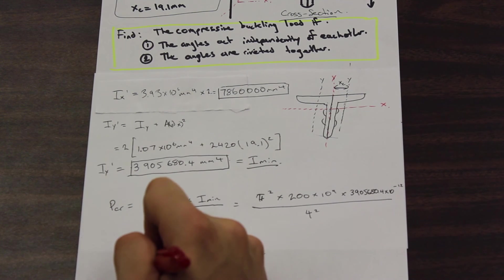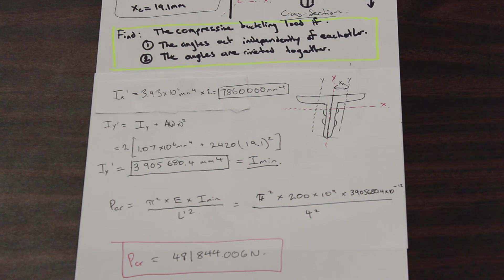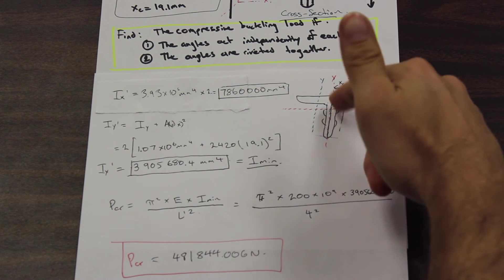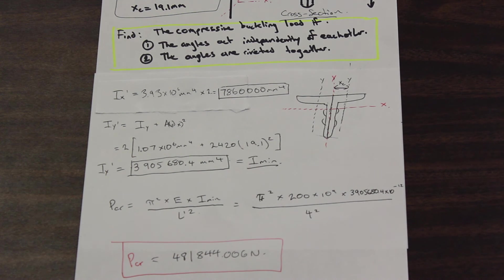So the maximum load that we can apply on this riveted two-angle column before it buckles or fails due to buckling. And that's it. It's as simple as that. Don't make silly mistakes, because this kind of question is a gimme on the exam. I hope this helped you guys out, and feel free to give us a like and subscribe if you enjoy our videos. And thanks for watching.